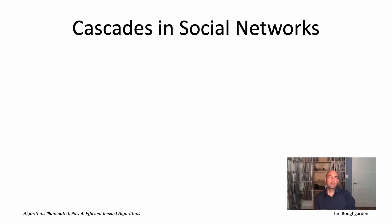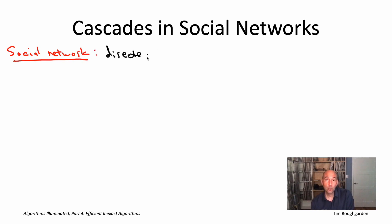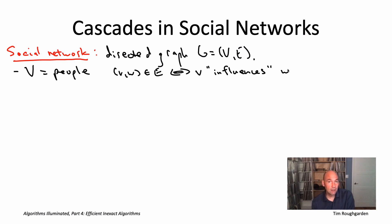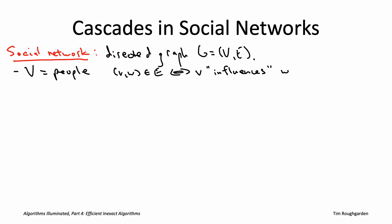For the purposes of this section, we can just think of a social network as a directed graph. The vertices of the graph correspond to people, and directed edges correspond to one person influencing another. For example, you might have a directed edge from a person V to a person W if W follows V on a social network such as Instagram or Twitter. A cascade model posits how information, like a news article or a meme, propagates through a social network. There are a lot of different well-studied cascade models for social networks.